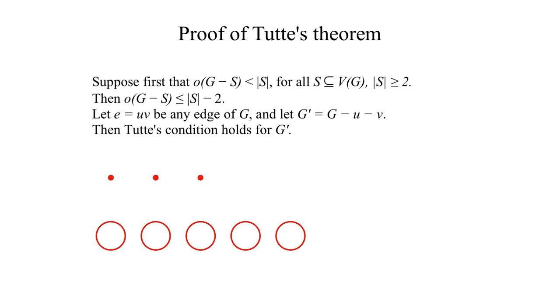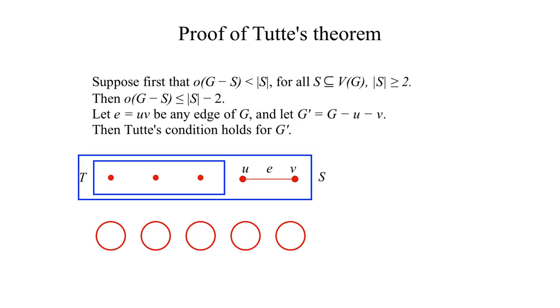For, if there exists a subset T of G prime such that the number of odd components of G prime minus T is greater than T, then taking S as the union of T with U and V, the number of odd components of G minus S is greater than or equal to S, contrary to the hypothesis.